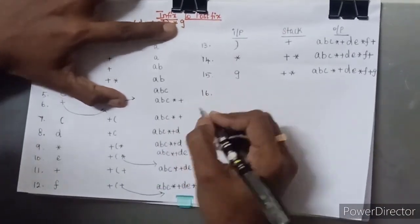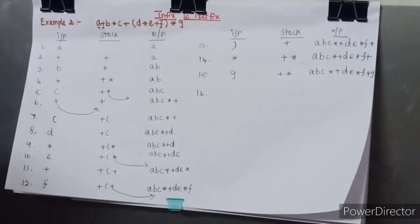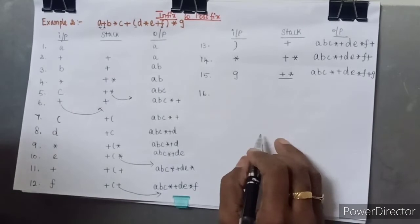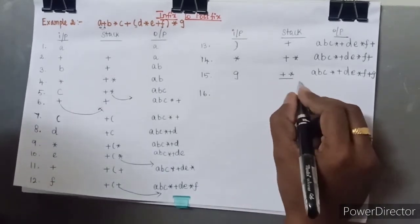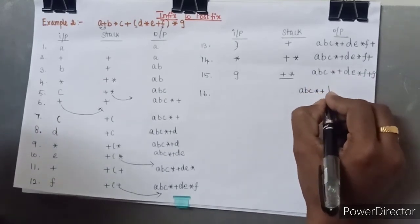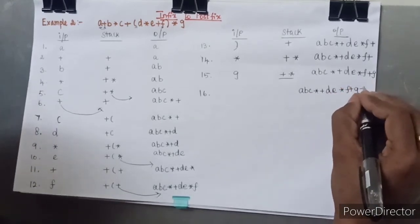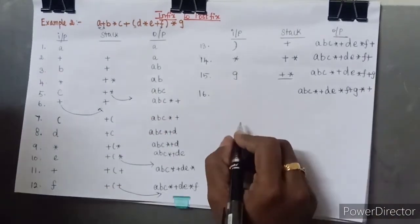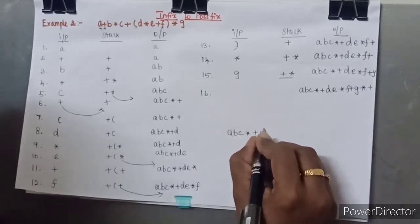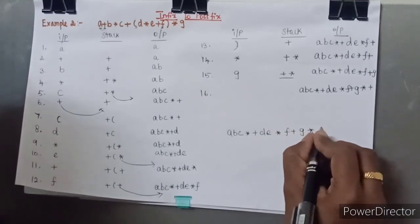At last, we have reached the end of the input. As per the algorithm, when we reach end of file, all remaining symbols must be popped from the stack and placed on the output. We have two symbols — star and plus — which are popped in order. The final postfix output is A B C star plus D E star F plus G star plus.